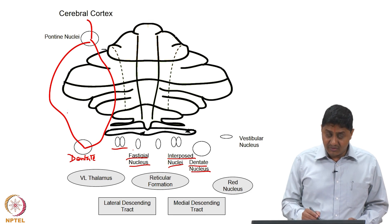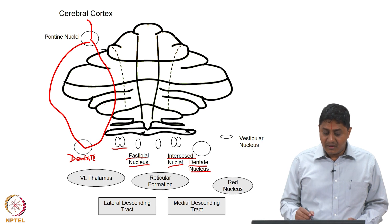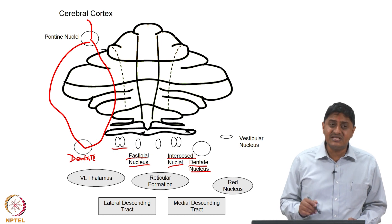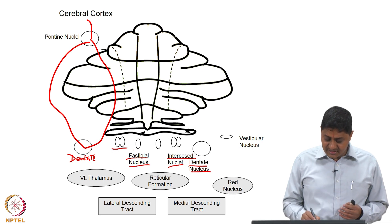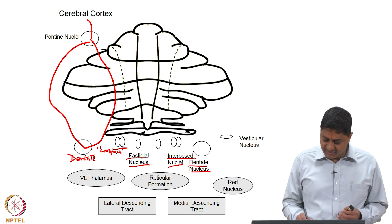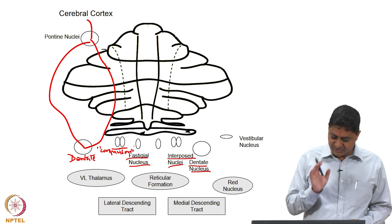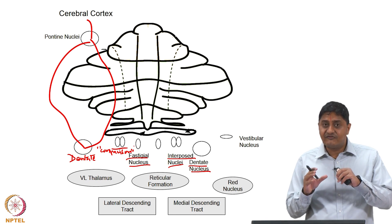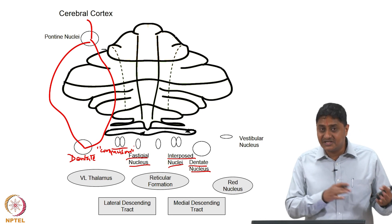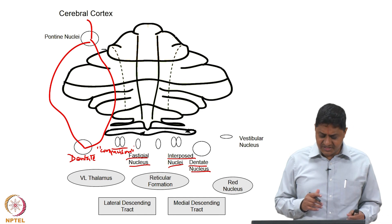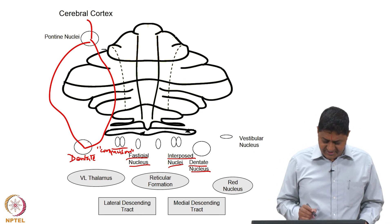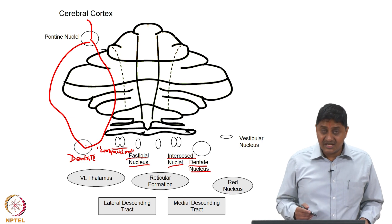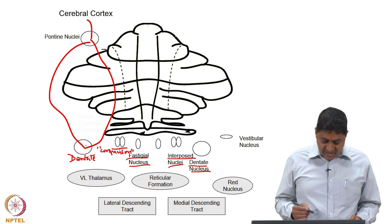The pontine nuclei project directly to the dentate nucleus, but the dentate nucleus also receives input from the cerebellar cortex — specifically Purkinje cell input. A comparison happens at this point, as we have seen during our discussion of the cerebellar microcircuit. The dentate nucleus compares input from the mossy fibers and input from the Purkinje cells, among other comparisons that occur within the cerebellar cortex.